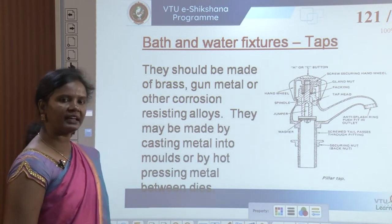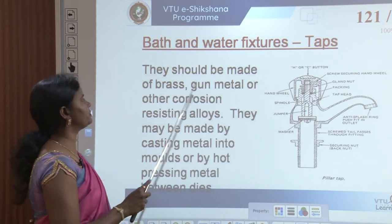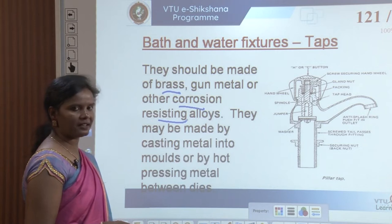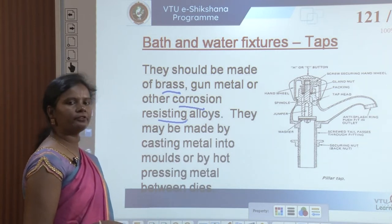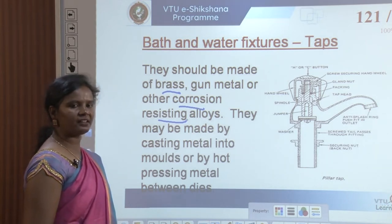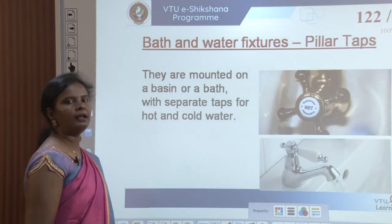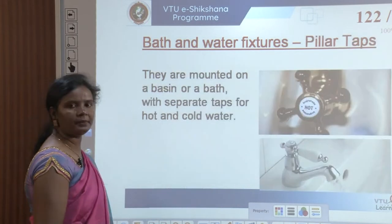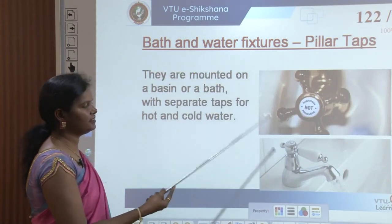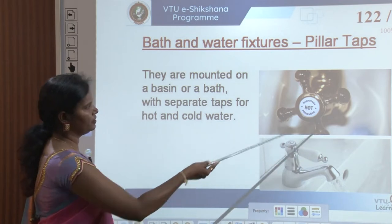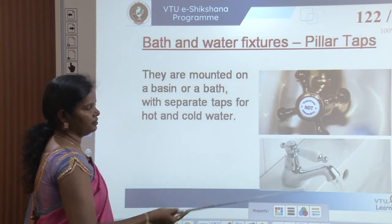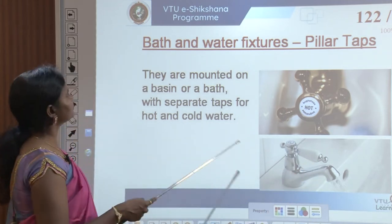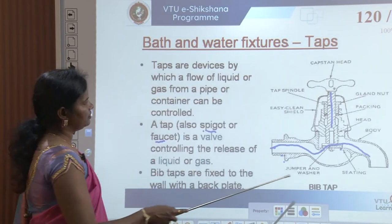These taps can be made of brass, gun metal, or other corrosion-resistant alloys. Whatever metal is used for making taps other than plastics, it has to be corrosion resistant. They may be made by casting metal into moulds or by hot pressing metal between dies. In a pillar tap, the tap outlet is above the spindle, whereas in a bib tap, the tap is below the spindle.